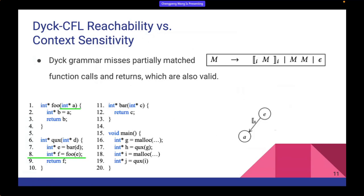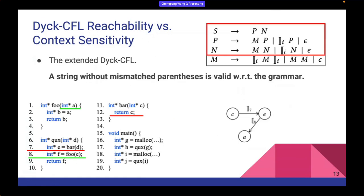But if we use the Dyck grammar, the path from C to E contains only an unmatched right parenthesis, which is not well-matched, so E is determined not reachable from C. Similarly, A is determined not reachable from E, and the path from C to A to E is also determined unreachable. So for context-sensitive analysis, we need to extend Dyck-CFL to allow partially matched parentheses. The extended Dyck-CFL allows a string as long as it does not contain mismatched parentheses, regardless of whether unmatched parentheses exist.